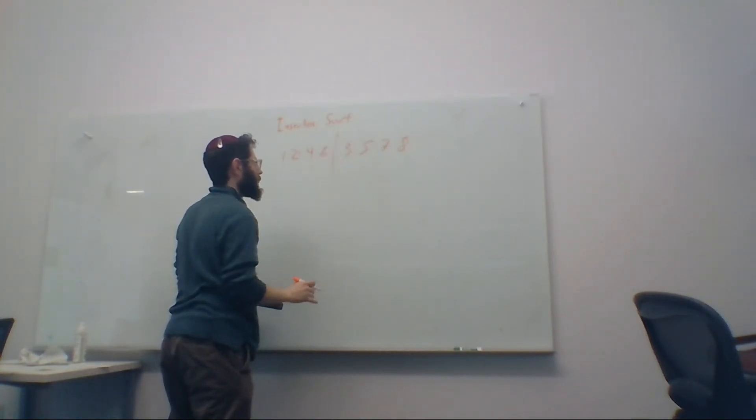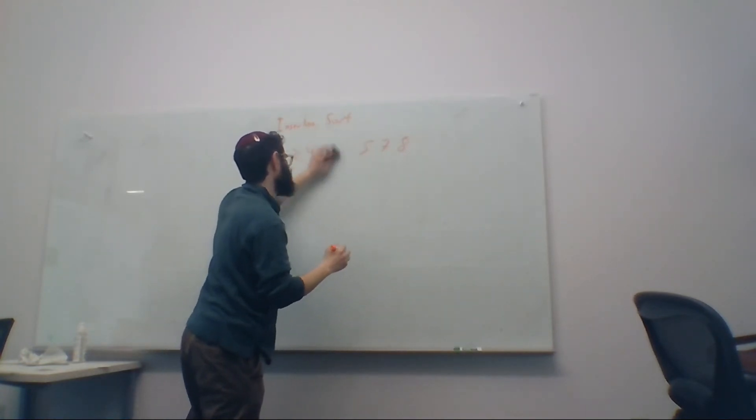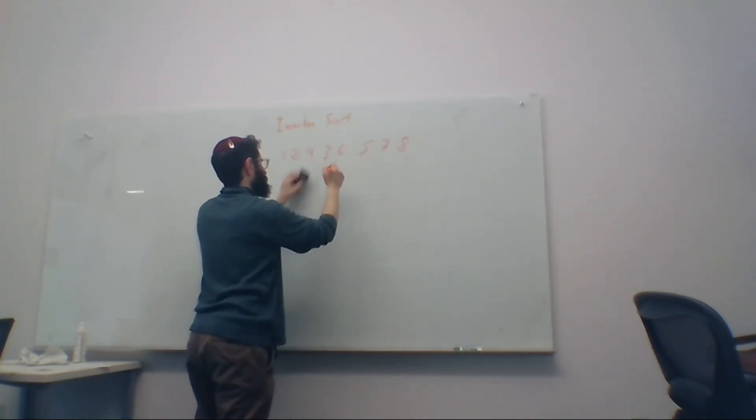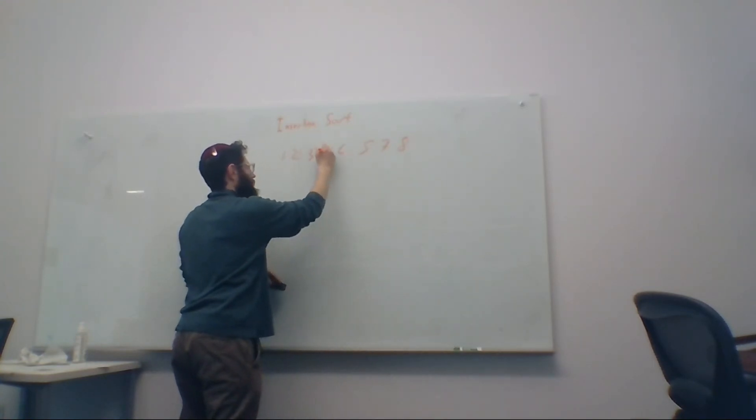So now three compared to, so now we're going to insert three. Three compared to six. Three is smaller than six. Three is smaller than four. Three versus two. Three is bigger than two, so we can stop because we know everything in front of two is already going to be smaller than two, so there's no need to check.